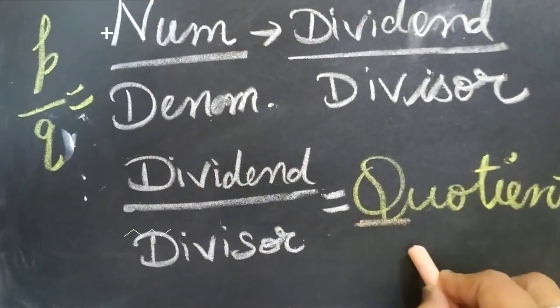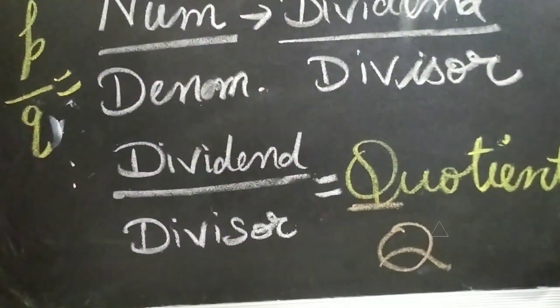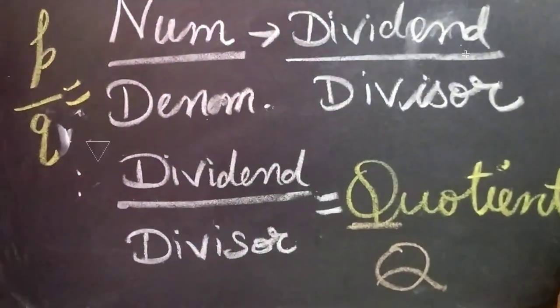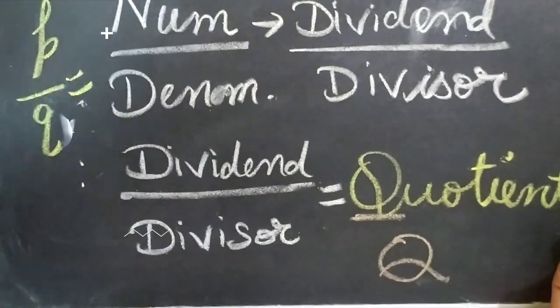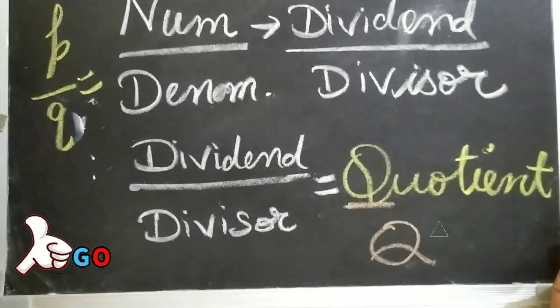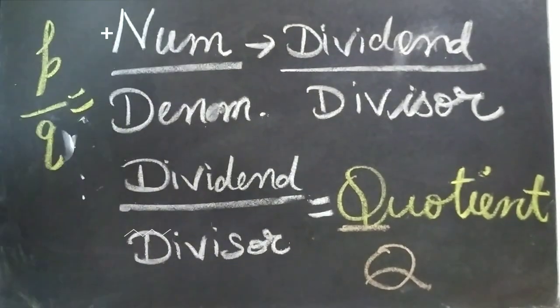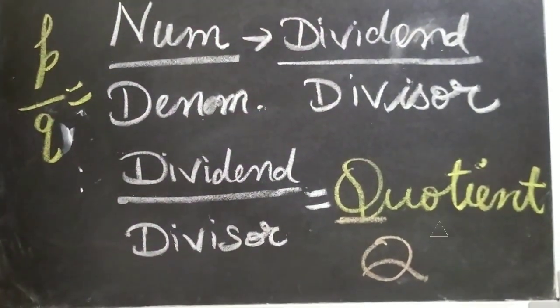So that is the reason rational numbers are represented with Q and not by R, because when you divide it, the answer is always called quotient, and quotient starts with the alphabet Q.